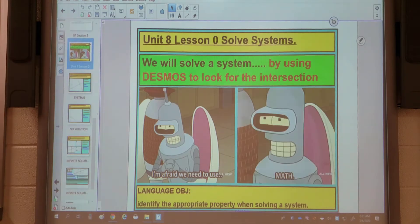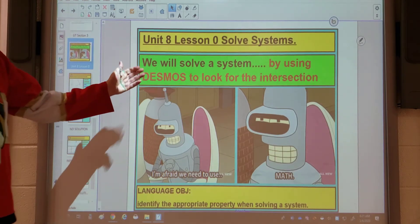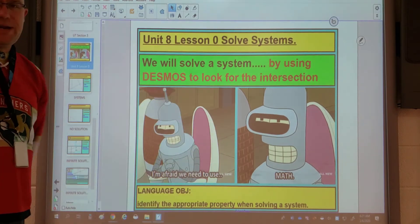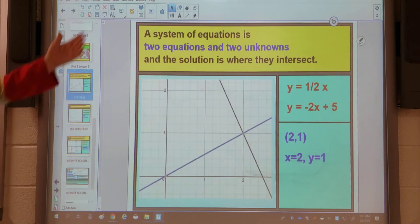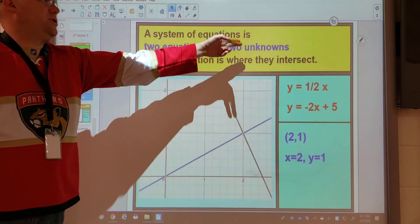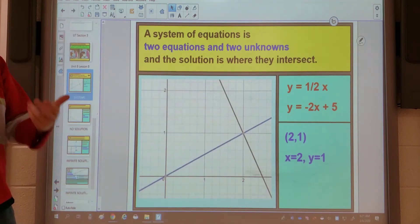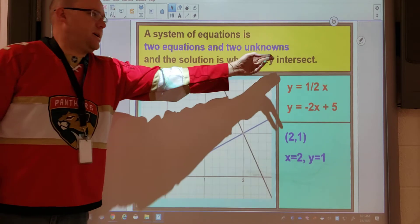So basically what we're going to do today is we're going to look at a system of equations and we're going to use DESMOS to look how to find the intersection. So first of all system of equations is a new expression for you. So it's something that has two equations and two unknowns normally x and y and the solution is where they intersect.